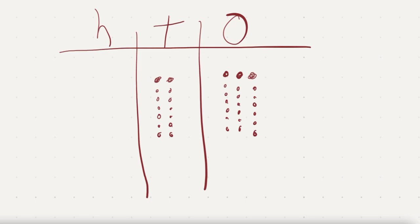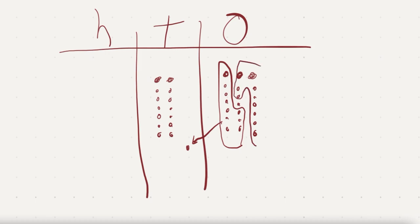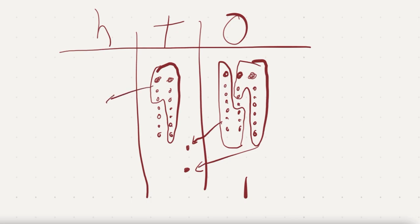And we're just going to use the same rules that we've already used before — we're making groups of 10. It just doesn't change. So there I need 7 and 3 more — that's a 10. And this 7 needs 3 more — that's a 10. And we have 1 left over. How many 10s do we have? Can we make any groups of 10? Of course we can — there's a group of 10, that's 10 tens, which is 100. And then we have 1, 2, 3, 4, 5, 6 tens left over, and 1 one. And there we have it: 23 times 7 equals 161.